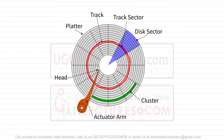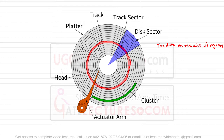This magnetic disc is a thin circular metal plate which usually records on either side — you can record on the upper side as well as on the lower side. The data on the disc is organized as a set of concentric circles called tracks. Each track holds the same number of manageable units called sectors. As you can clearly see in the diagram, every track has an equal number of sectors.